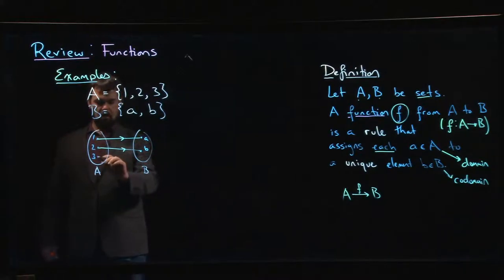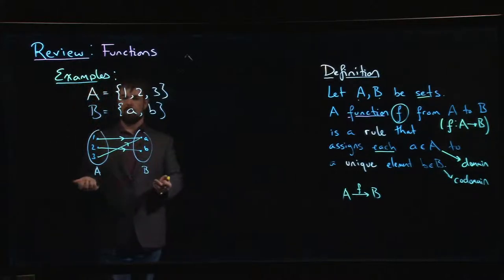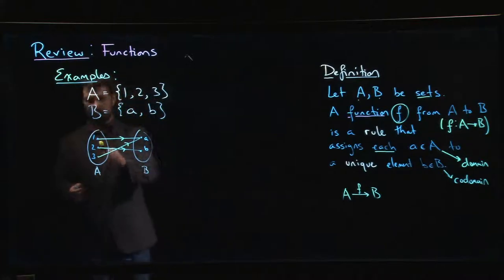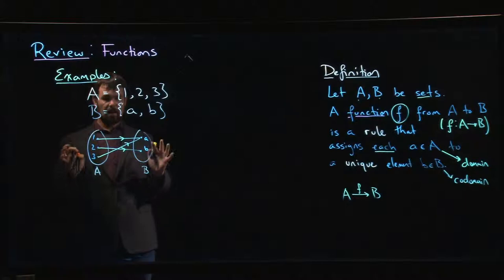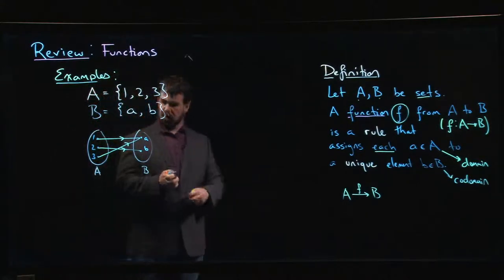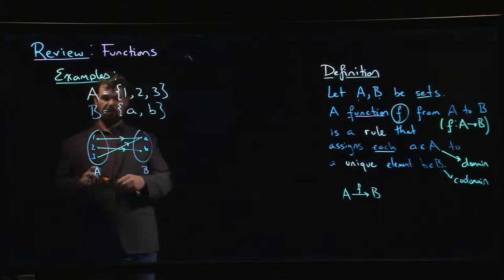So we have a function right now. You might be concerned that there are two different elements of the domain that both get sent to A. This is okay - you're allowed to have this in a function. What you can't have is two different arrows coming out. If one went to both A and B, I would not have a function.